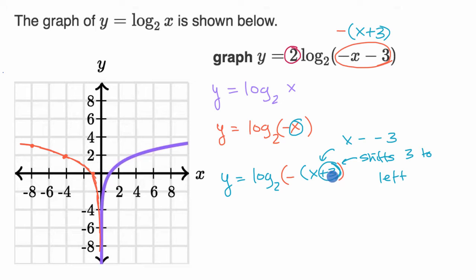If it was an x minus three in here, you would shift three to the right. So how do we shift three to the left? Well, the points where we used to hit zero are now going to happen three to the left of that. So we used to hit it at x equals negative one, now it's going to happen at x equals negative four. The point at which y is equal to two, instead of happening at x equals negative four, is now going to happen three to the left of that, which is x equals negative seven.